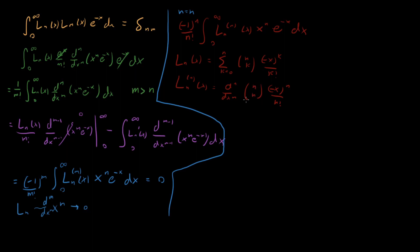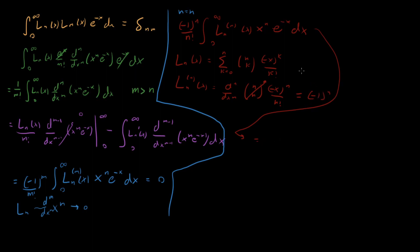Now, n-choose-n equals 1. Taking n derivatives of x^n gives n factorial, so n factorial divided by n factorial is 1. The factor of (−1)^n comes from the (−x)^n term. So the n-th derivative of L_n is just (−1)^n. Substituting back, we have (−1)^n times (−1)^n over n factorial, which is (−1)^(2n) over n factorial. Since 2n is always even, this equals 1 over n factorial times the integral from 0 to infinity of x^n e to the minus x dx.